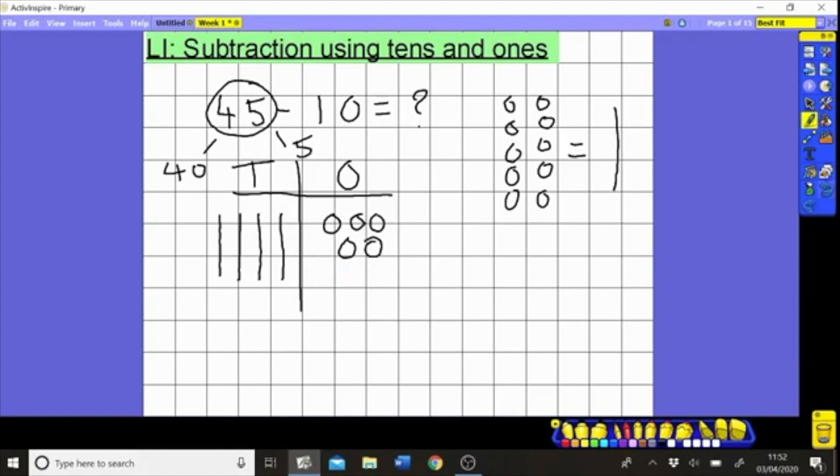So I'm just going to subtract one ten. Now I have my new answer which is ten, twenty, thirty, one, two, three, four, five - thirty five. So 45 subtract 10 is 35.